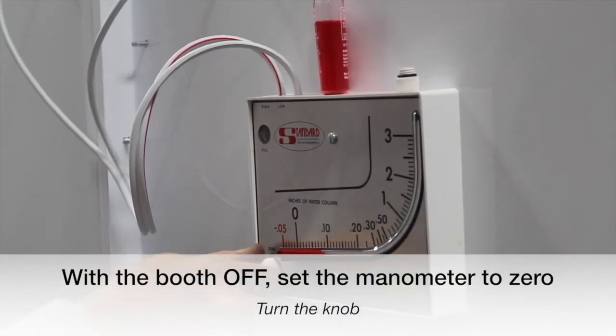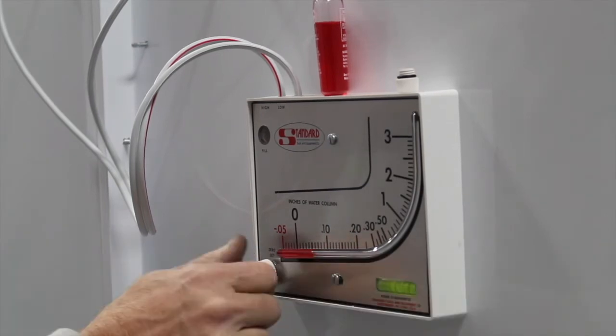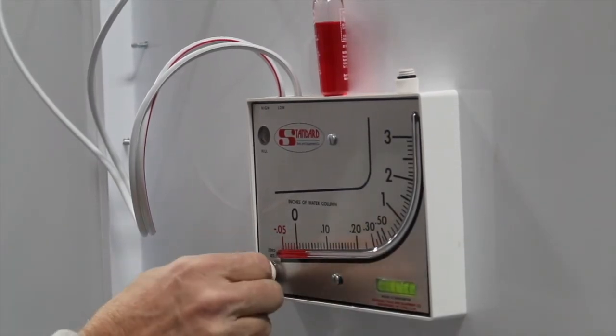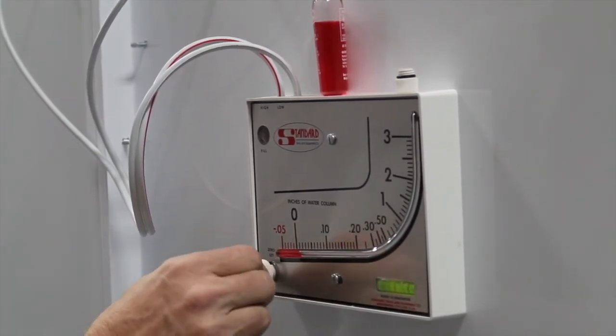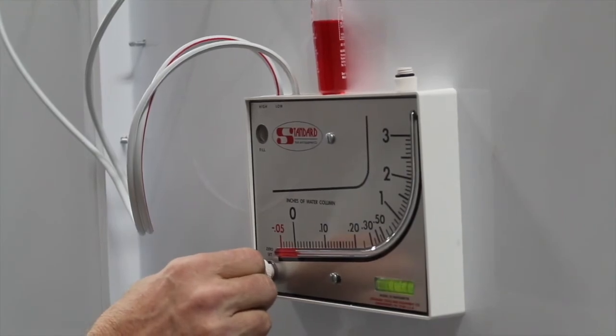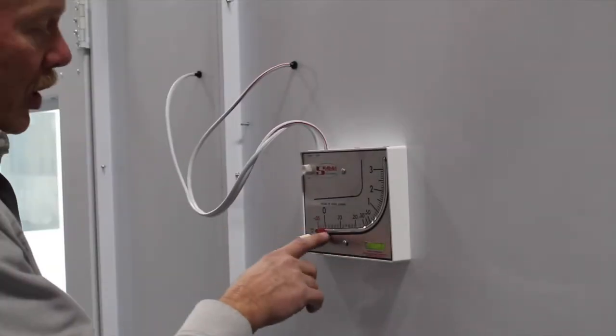This is what the zero set. Unscrew the zero set and it will pull it in a well. And you want to set that at zero. Fluid in, we have zeroed.